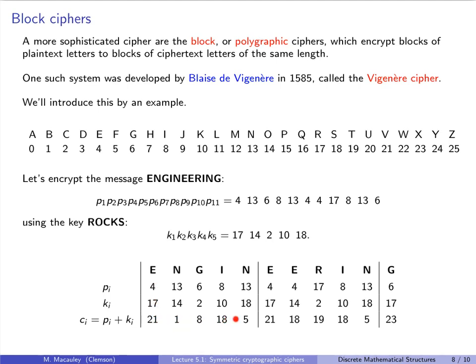So here that is. The sum of PI plus KI for each entry. It's 21, 1, 8, 18, 5, 21, 18, 19, 18, 5, 23. And the letters are V, B, I, S, F, V, S, T, S, F, X. So that's how you encrypt with this cipher.